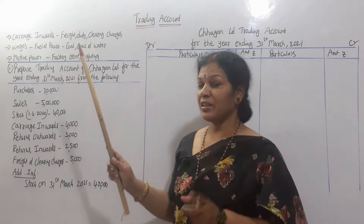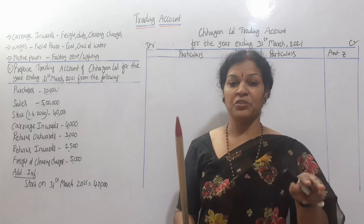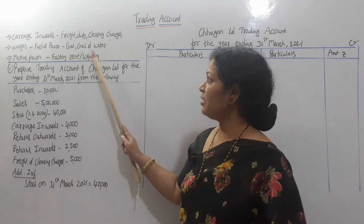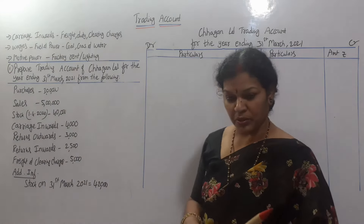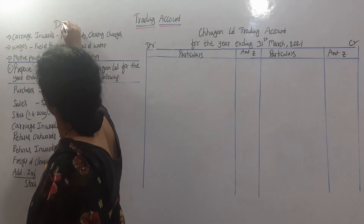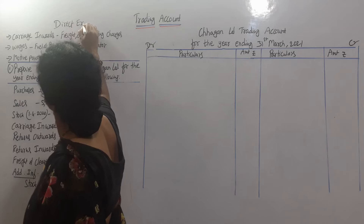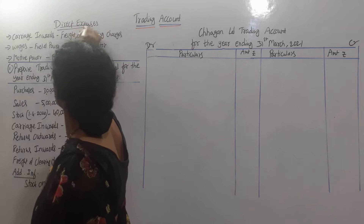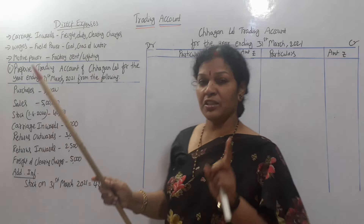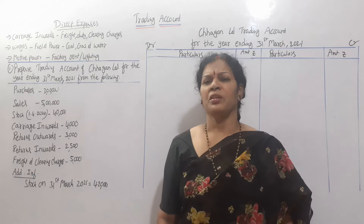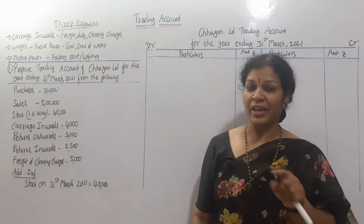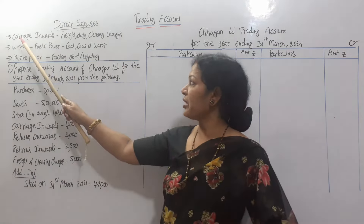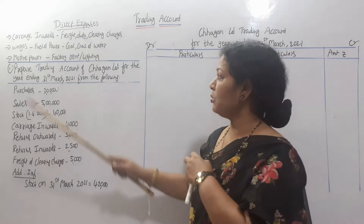What are direct expenses? They are called factory expenses — expenses at the manufacturing level. I will list the factory expenses. Direct expenses are expenses incurred in the factory. Carriage inwards is transportation inside of the company, i.e., transportation within the factory. That is carriage inwards.